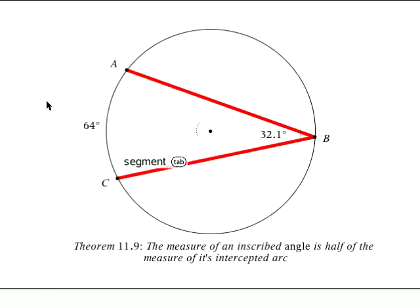Now the first theorem is the measure of an inscribed angle is half the measure of its intercepted arc. So we see here that the measure of our intercepted arc is 64. Our inscribed angle is 32.1.